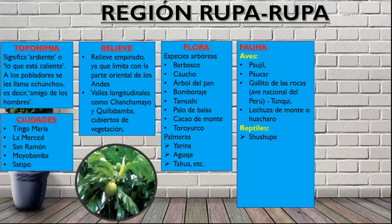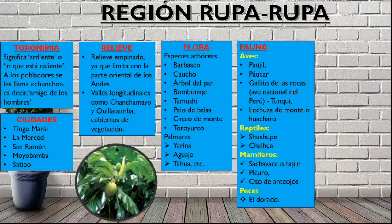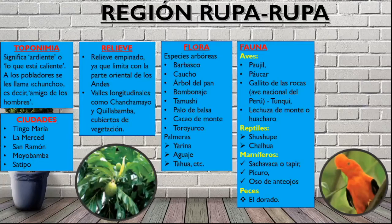Reptiles también vamos a ver en la región Selva Alta o Rupa Rupa, como por ejemplo la chuchupe, que es una serpiente, y la chalgua. También algunos mamíferos correspondientes a esta región como la sachavaca o el tapir, el picuro, el oso de anteojos. Y algunos peces como el pez dorado. Hemos visto hasta ahora: toponimia, ciudad, relieve, flora y fauna.